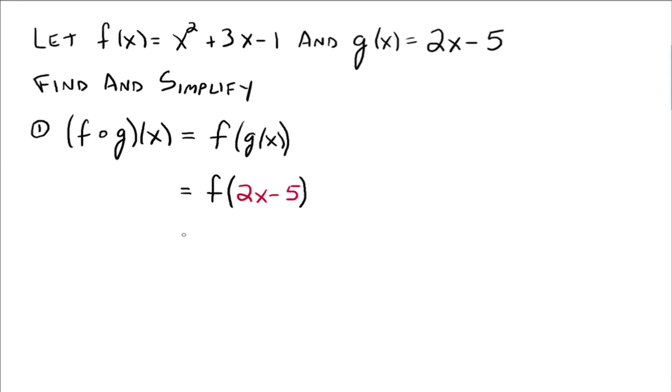Okay, so our next line down here then would be: go to the f function, which is this one, wherever we see an x, put in 2x - 5. So we have (2x - 5)² because we're plugging it in right there for x, plus 3 times (2x - 5) because we're plugging 2x - 5 in for that x right there, and then minus 1.